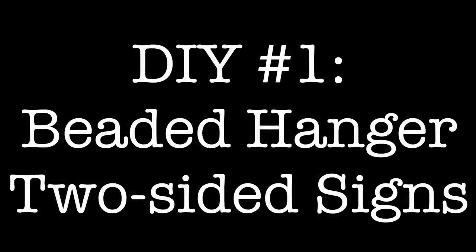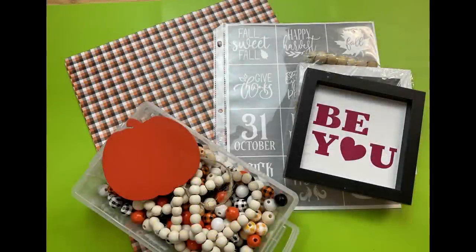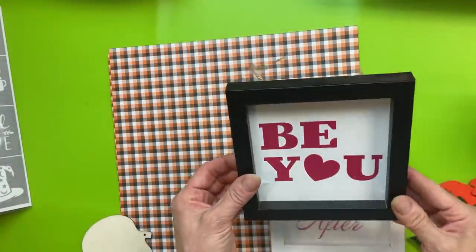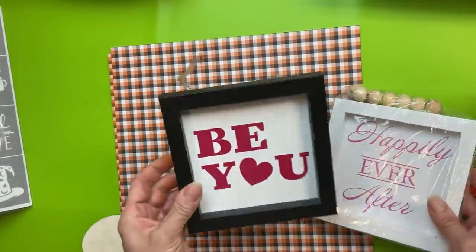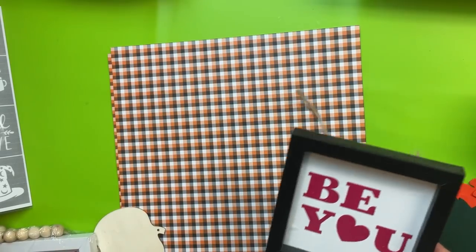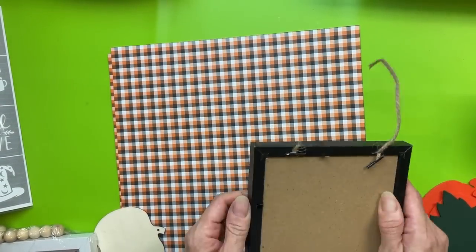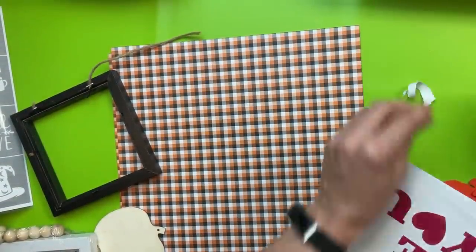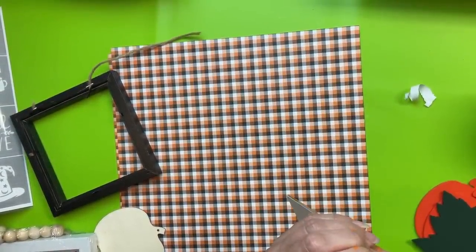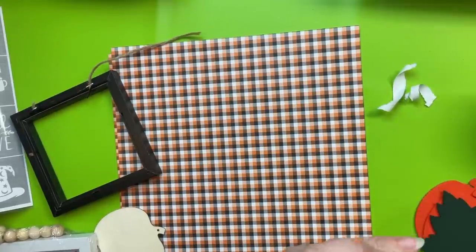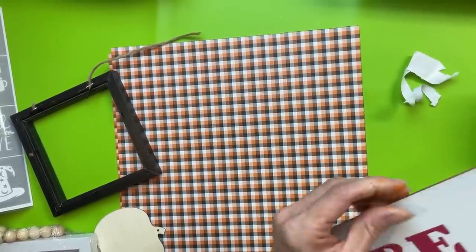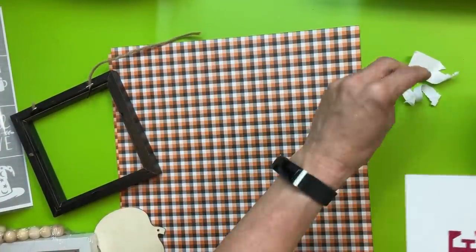For today's first DIY we're going to be using these beaded hanger signs and make some two-sided Halloween and fall home decor. So the first thing we're going to do is take these wood beaded signs that have the black backing. You'll see I had removed the beads from this one, but no worries we're going to add some beads back in. I love these signs because of the beads and because it's so easy to get the backing in and out. Now here I am taking some time to remove some paper, but that is completely optional. You can just Mod Podge right over the backing, whatever it is.